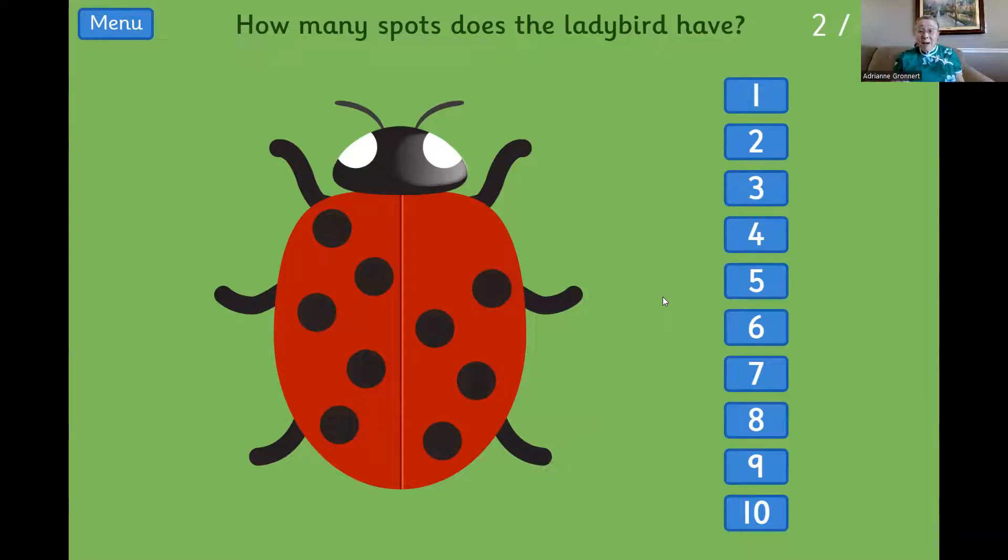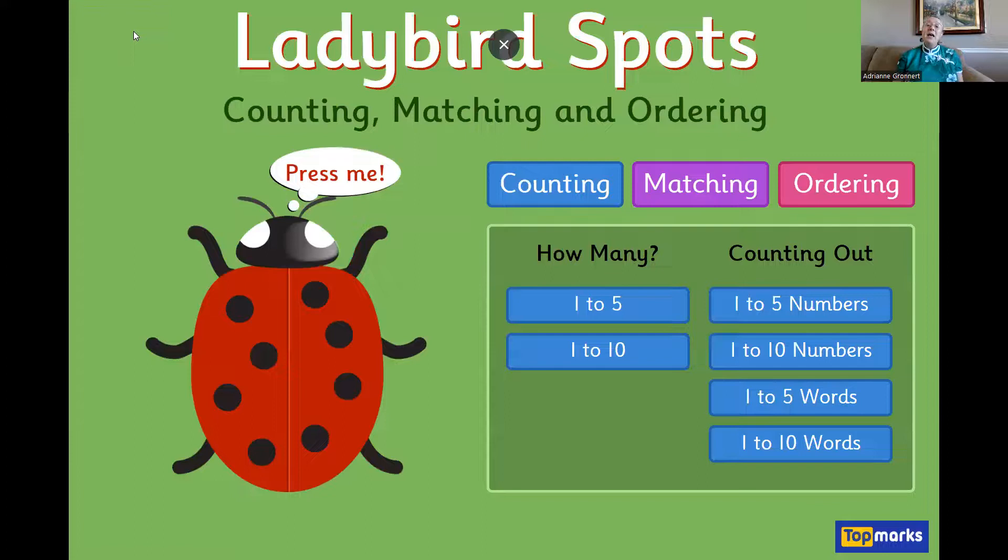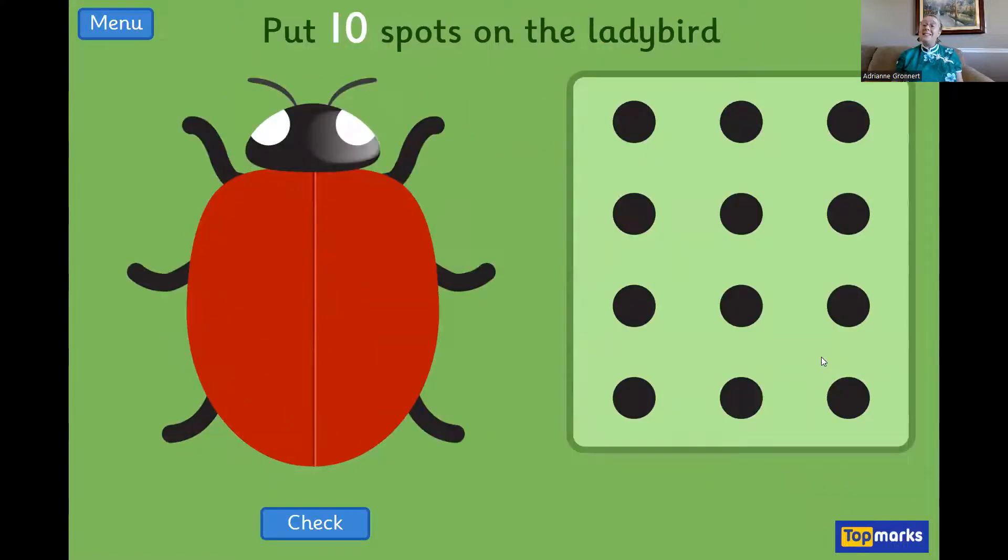But now, I'm going to show you the next way you can play. If you're done, you can click X, or you can just click menu. Then, we're going to do counting again, but this time, we're counting out one to ten numbers.